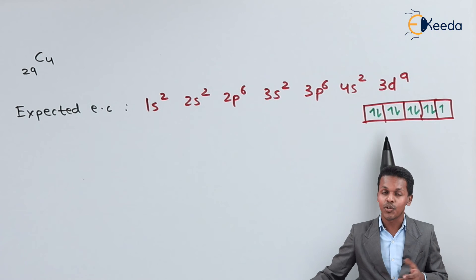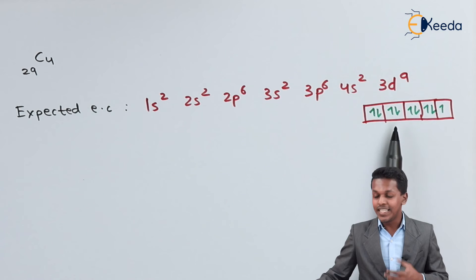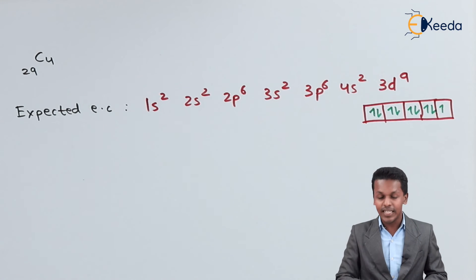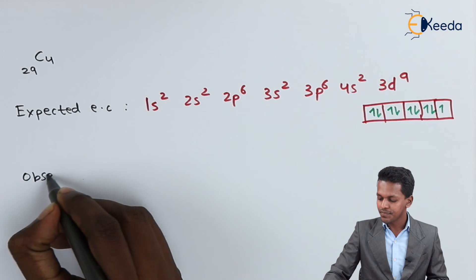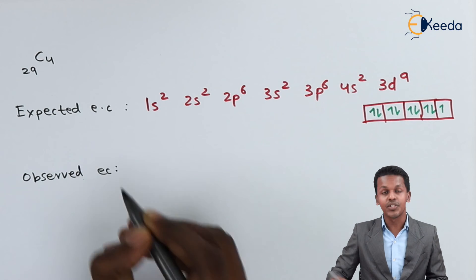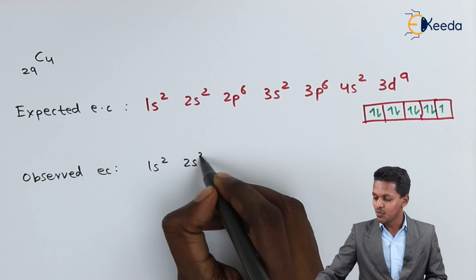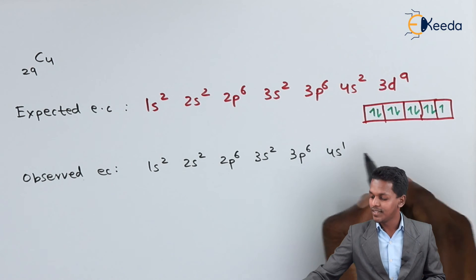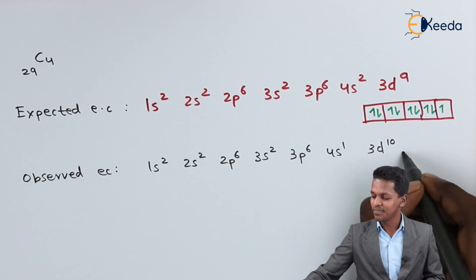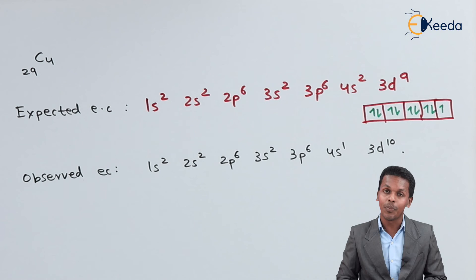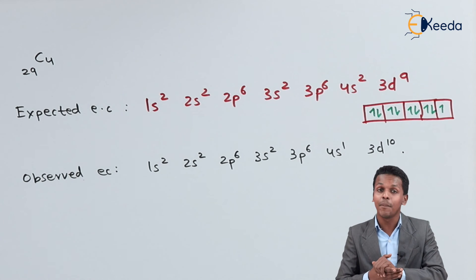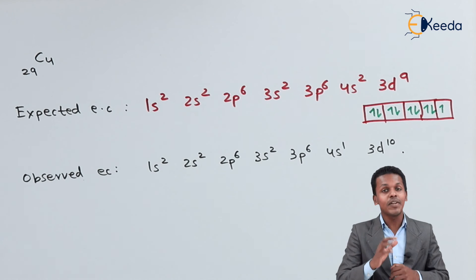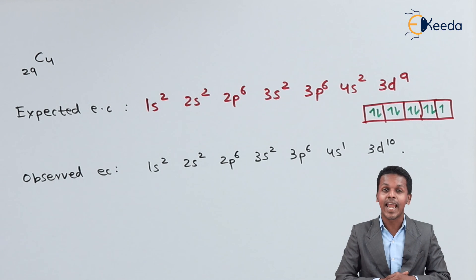So what happens is one electron from the 4s transfers to 3d9, making this orbital acquire a 3d10 configuration. This happens because if the d orbitals are completely filled or half-filled, they acquire extra stability. That is the reason the observed electronic configuration of Copper is: 1s2, 2s2, 2p6, 3s2, 3p6, 4s1, 3d10. This is how Chromium and Copper show different electronic configurations compared to what is expected. Thank you friends for watching this video — I hope you have understood this clearly and I will see you next time.